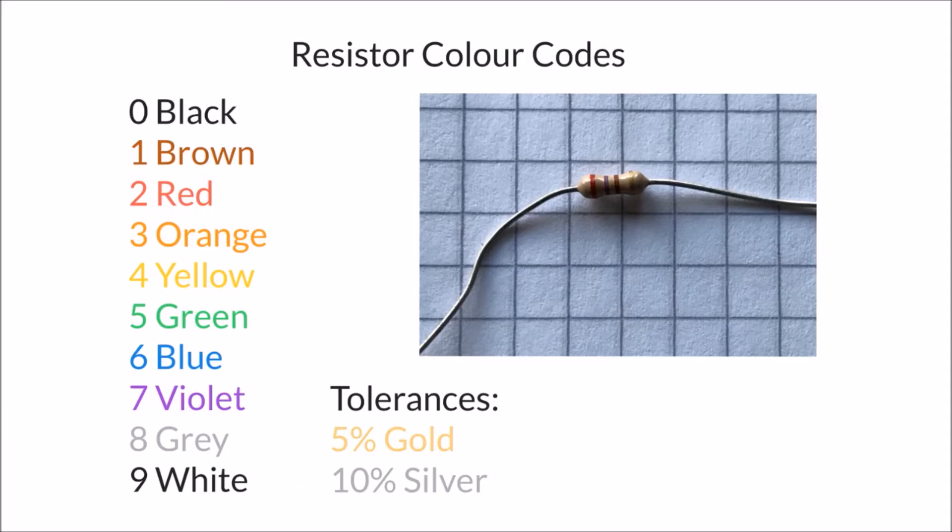Resistors we've looked at in previous videos - they're components that can limit current in a circuit. These components are generally very small, especially with modern microelectronics. Resistors can be very large as well but a common example is this type here. I've taken a photograph that you can see on the screen here and it's laid on a half centimeter scale so you can see that the resistor is a very small component, in this case just over half a centimeter long.